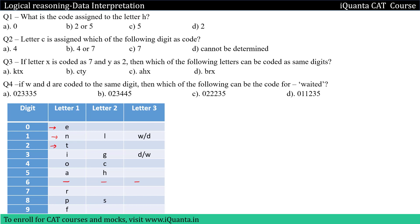What is the code assigned to the letter H? H is assigned to 5. Option C will be the correct answer. Next: letter C is assigned to which of the following digit as code? C is assigned to 4. Option A will be the correct answer.